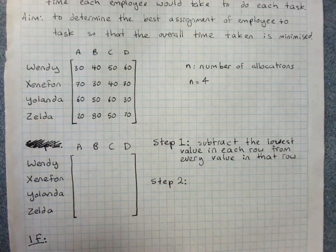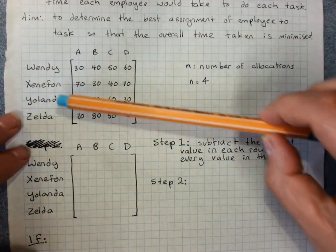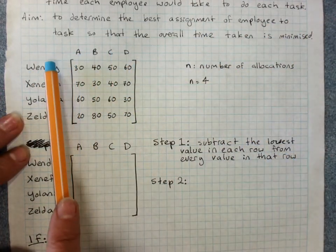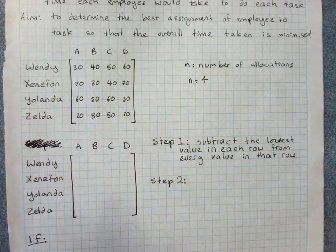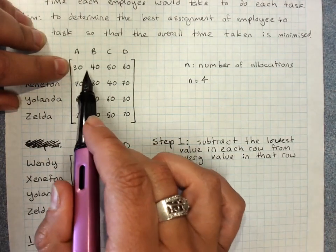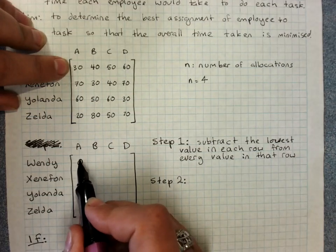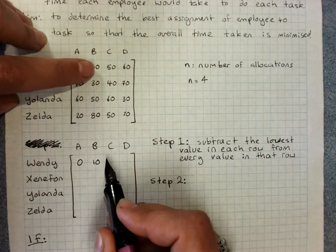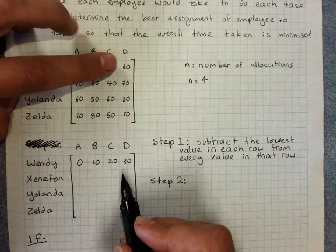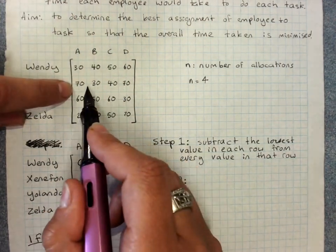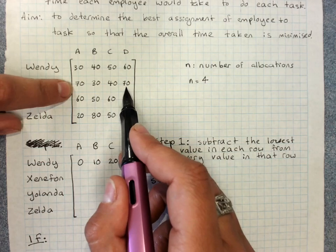Step one is subtract the lowest value in each row from every value in that row. All right. So remember rows go across this row. Lowest value is 30. So we're taking 30 away from every row. 0, 10, 20, 30. Lowest value is 30. So we're taking 30 away from every value here.